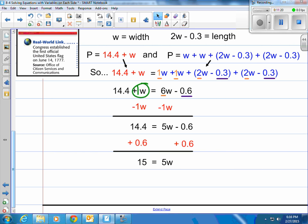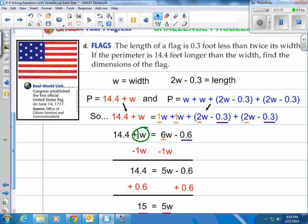Last step, we're going to divide by 5. When we divide both sides by 5, you end up with W equaling 3. And there's your answer. The width is 3.